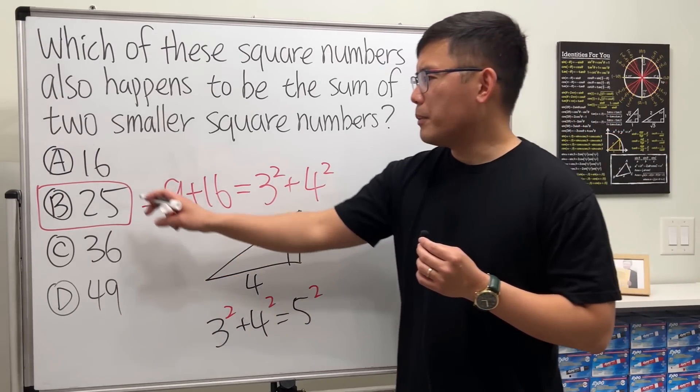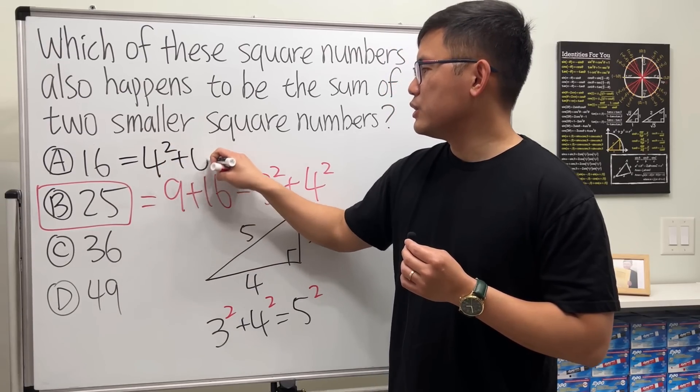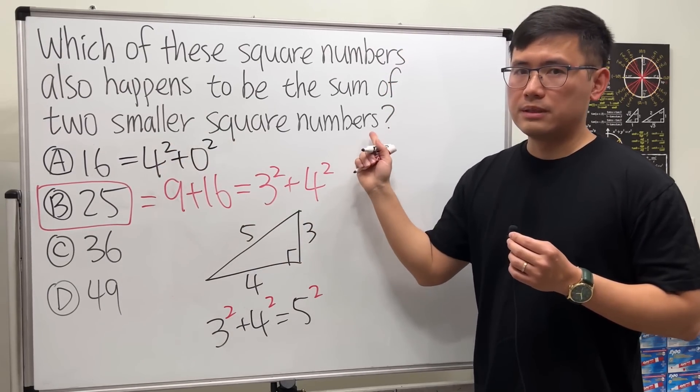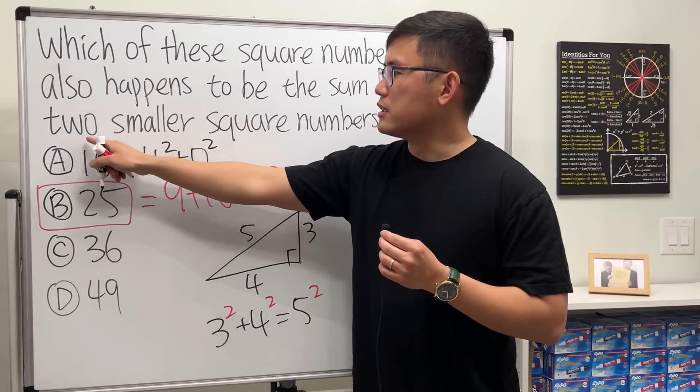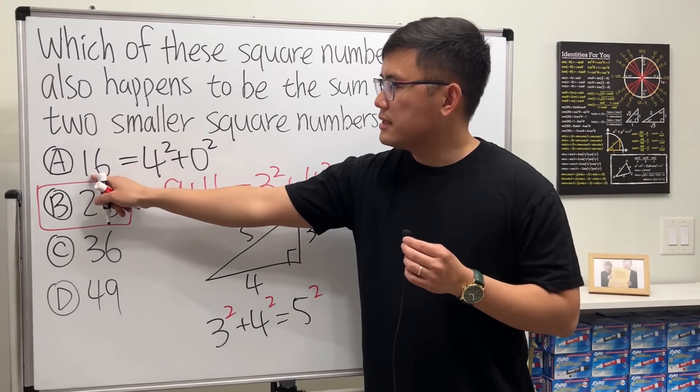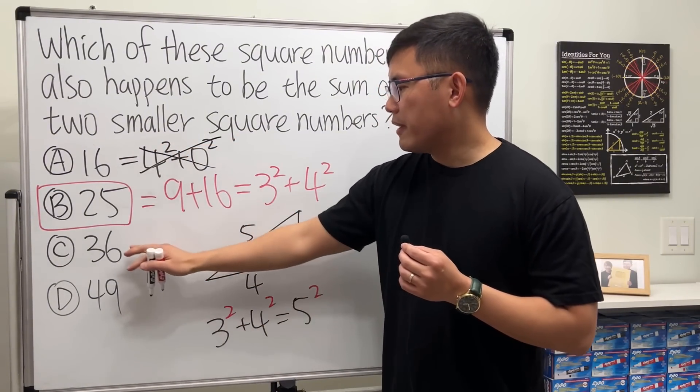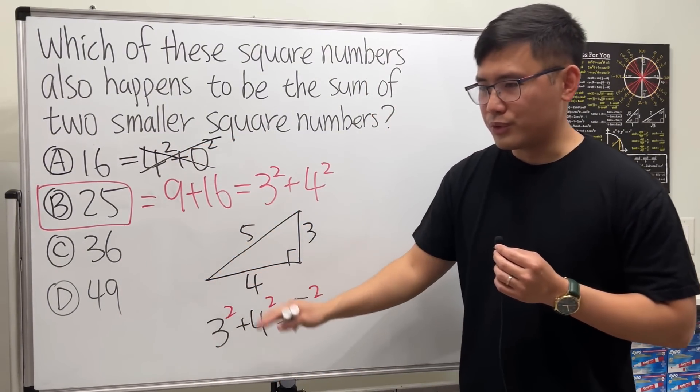Some of you guys might think, hey, how about 16? We can write it as 4 squared plus 0 squared. But you have to be careful with the small detail here. We want the sum of two smaller square numbers. 16 equals 16 plus 0 - this is not okay. Same thing for the other options.